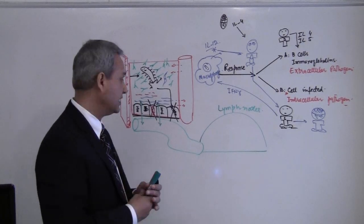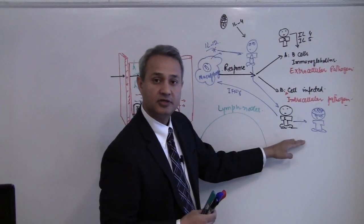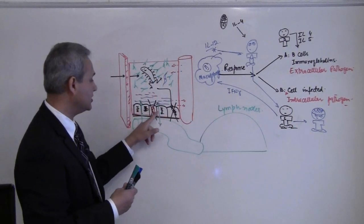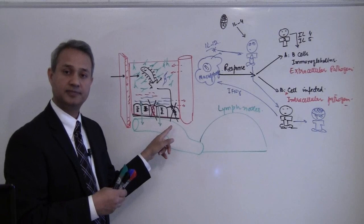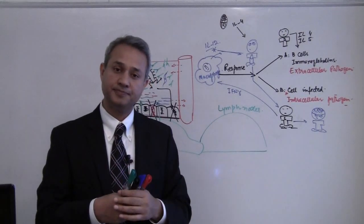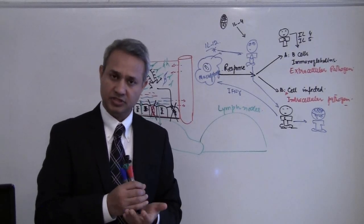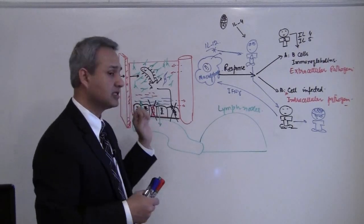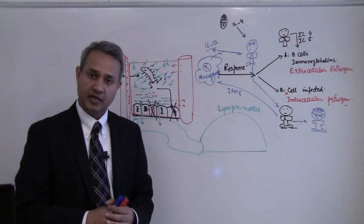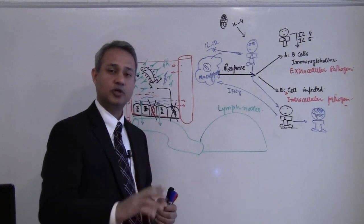In other people, the same pathogen goes the right path. Cytotoxic T cells are activated. Cytotoxic T cells come and they destroy these cells, including the pathogen. And the person only develops tuberculoid leprosy. Tuberculoid leprosy is a milder situation, can be handled easily as compared to lepromatous leprosy, which is quite a horrible and dangerous disease.